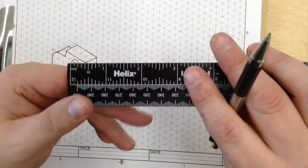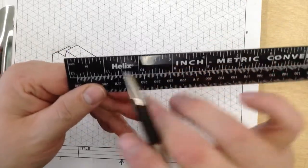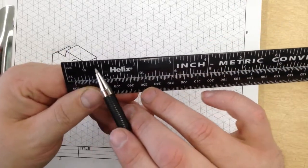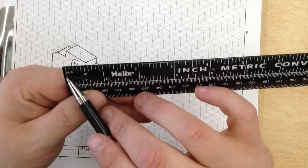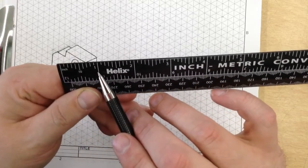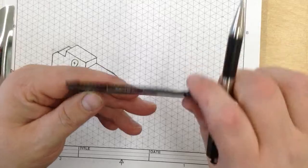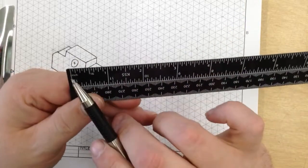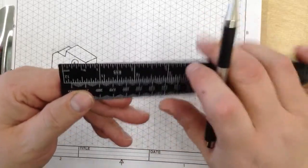You have to be careful because quite often engineering rulers are subdivided into tenths of an inch. So you need to make sure that you're using the proper size ruler for the job. So for this one we're going to be using the side with sixteenths of an inch.